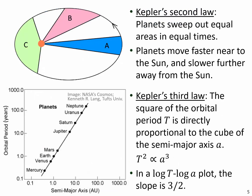Besides the first law, Kepler also describes that planets move with different speeds at different distances from the Sun. That's Kepler's second law: planets sweep out equal areas in equal time. If you consider a planet at some point and join it to the Sun with a line, after one month that line will sweep area A. When the planet arrives at another position, for another month it will sweep area B, and later area C. Kepler found that areas A, B, and C will be the same — meaning planets move faster near the Sun and more slowly further away.